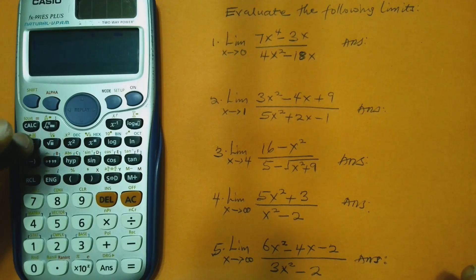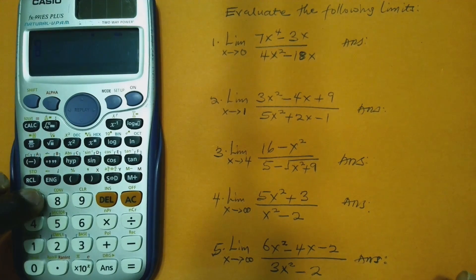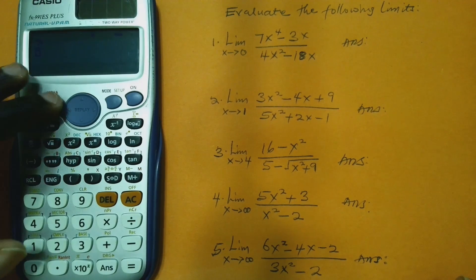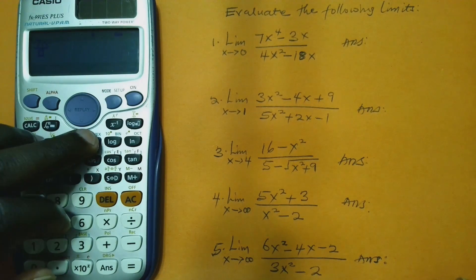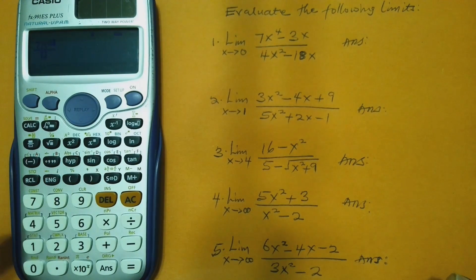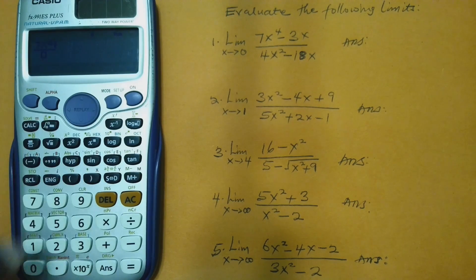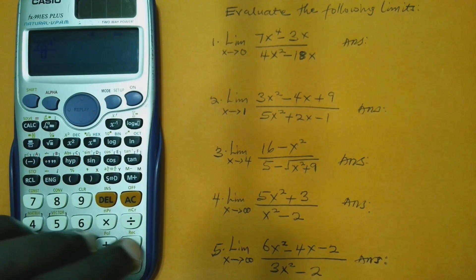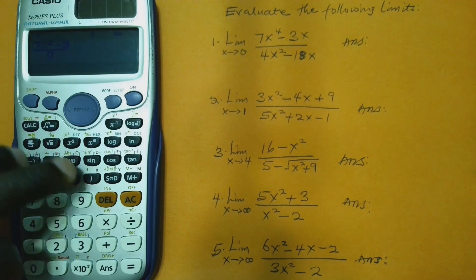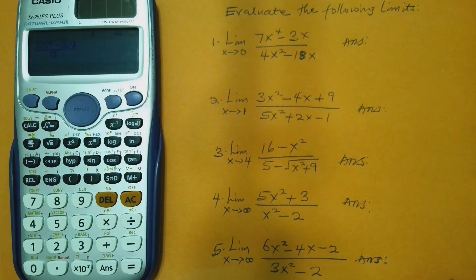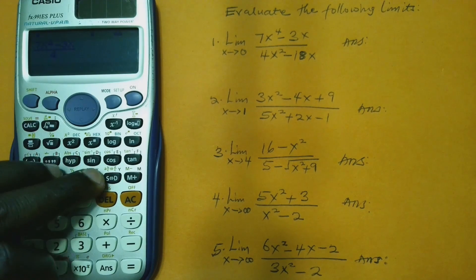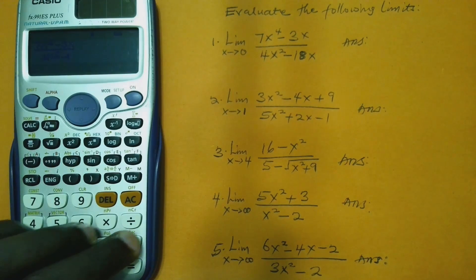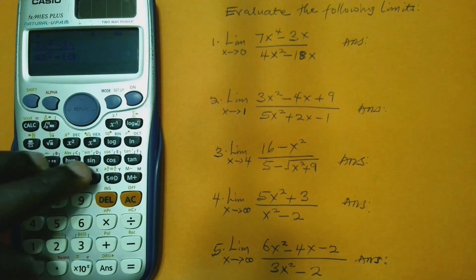This is a fraction, so we start with the fraction symbol. Then we put 7x — x is an alphabet, so we need the alpha key — so Alpha, then the close parenthesis key which gives us x. Then we use the exponent key for the power of four. Remember to press the right arrow key to bring the cursor down, then minus 3, Alpha, x. So we get the numerator. Then we bring the cursor down using the down arrow key, then put 4, Alpha, x, squared, minus 18, Alpha, x.